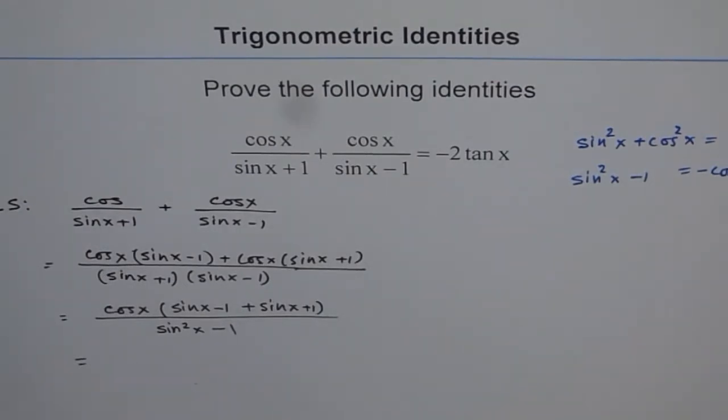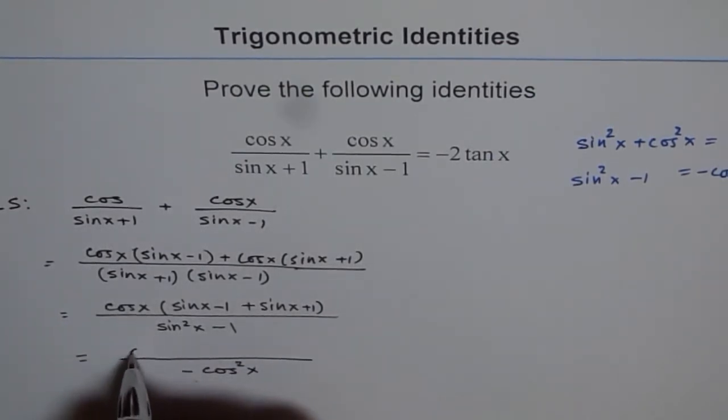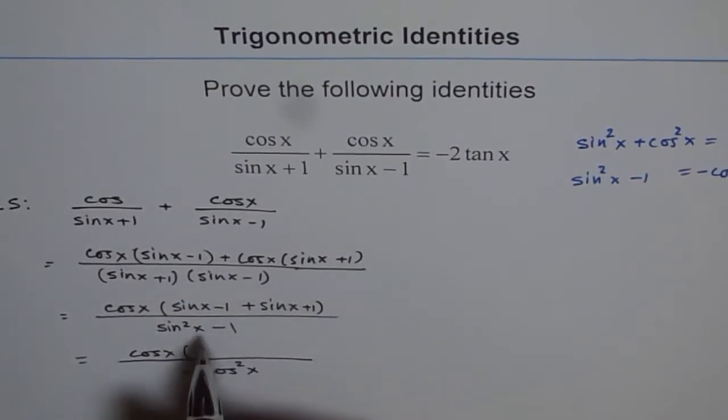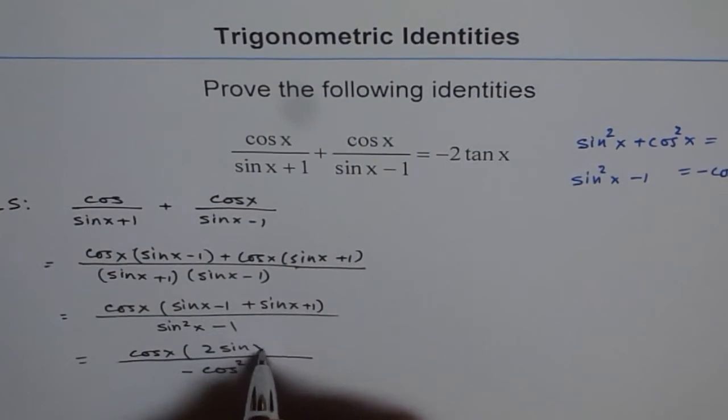This is what we're going to use here. In the denominator, we'll have minus cos squared x. In the numerator we have cos x, and sin x plus sin x is 2 sin x. The minus 1 plus 1 cancels to 0.